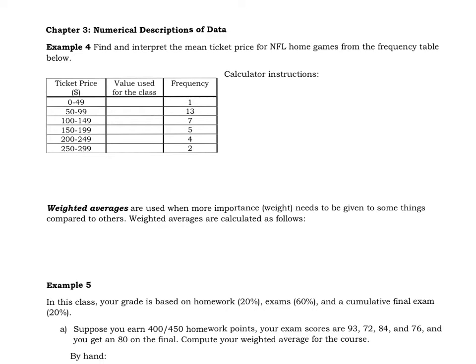Looking at the table, we have notice we don't have the exact ticket prices for any single NFL team home game. What we have is how many fall within a range of ticket prices. So the way that you handle this for the value used for the class, what you end up using is you use the midpoints of the classes. So in the 0 to 49, the midpoint is 25, in the 50 to 99 it's 75, etc. as you work your way down.